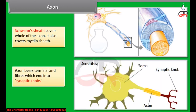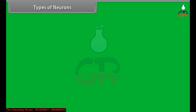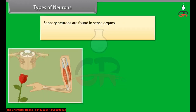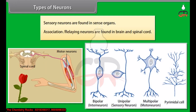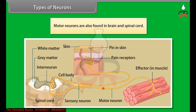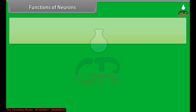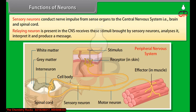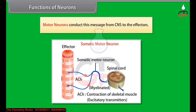On the basis of their functions, neurons are of three types: sensory, association/relaying, and motor. Sensory neurons are found in sense organs. Association or relaying neurons and motor neurons are found in the brain and spinal cord. Sensory neurons conduct nerve impulses from sense organs to the central nervous system, that is, the brain and spinal cord. Relaying neurons are present in the CNS; they receive stimuli brought by sensory neurons, analyze and interpret them, and produce a message. Motor neurons conduct this message from the CNS to the effectors.